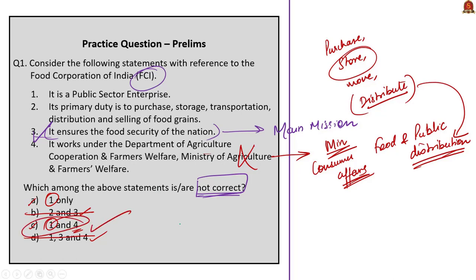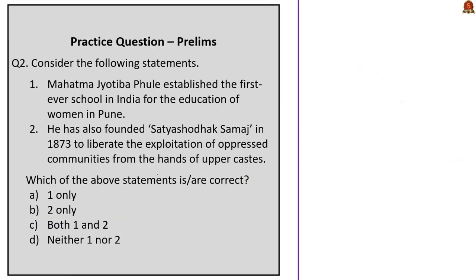The next question is about Mahatma Jyotiba Phule. Statement 1 states he established the first ever school in India for the education of women in Pune — this is correct. Statement 2 states he founded Satya Shodak Samaj in 1873 to liberate oppressed communities from the exploitation of upper castes — this is also correct. So the correct answer is option C: both 1 and 2.